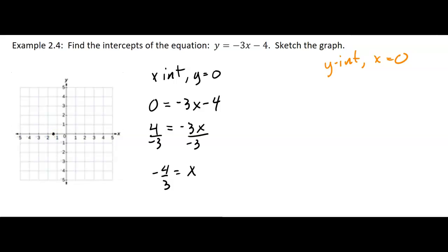So negative 1 and 1 third, about there. Now for the y-intercept, I'm going to let x equal 0, and that's just going to give me negative 4. So on the y-axis, I'm going to graph the y-intercept at negative 4 right there.